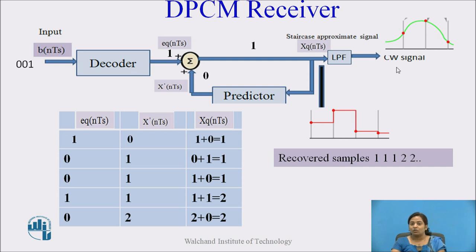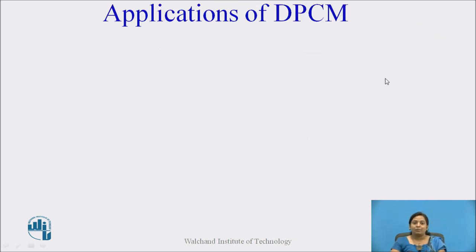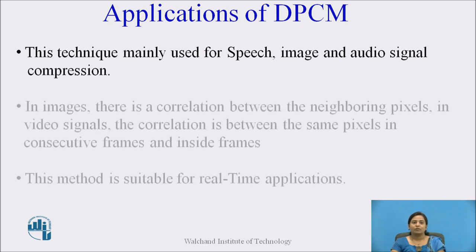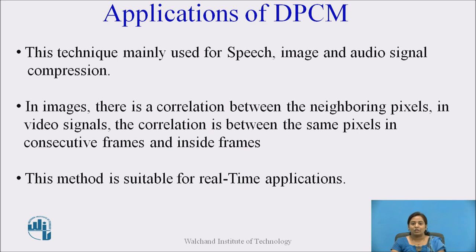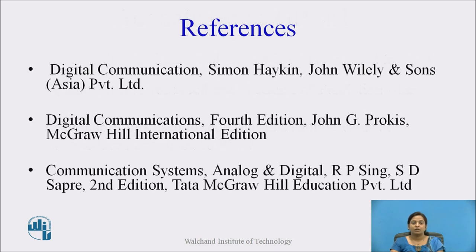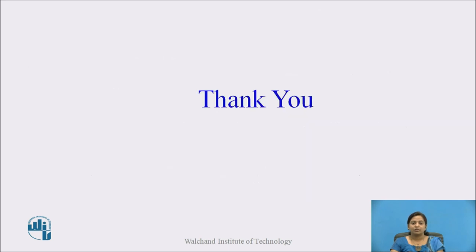At the output of the low pass filter, the original signal is recovered. In the applications of DPCM, this technique is mainly used for speech, image, and audio signal compression, and is suitable for real-time applications. The advantages of DPCM include: the bandwidth required is less compared to PCM, quantization error is reduced because of the prediction filter, and the number of bits used to represent one sample value is also reduced compared to PCM. Thank you.